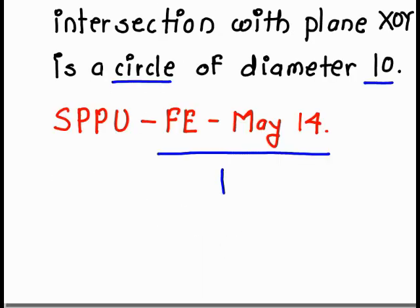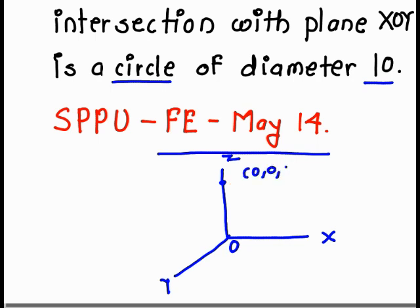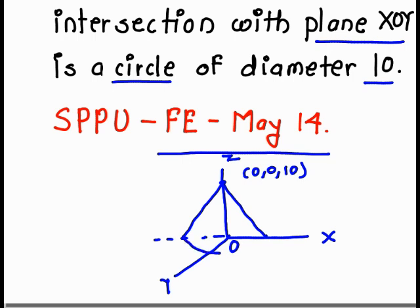First of all, we draw the 3D plane — X, Y, Z. This is our origin and this is our Z axis. The vertex is at (0, 0, 10), so consider this point at (0, 0, 10). The intersection with the XOY plane is a circle with diameter 10, so the radius is 5. The height from the origin to the vertex is 10.